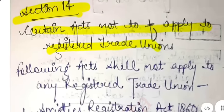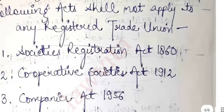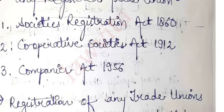Section 14 deals with certain acts not applicable to registered trade unions. The following acts shall not apply to any registered trade union: the Societies Registration Act 1860, the Cooperative Societies Act 1912, and the Companies Act 1956. These three acts will not apply to registered trade unions.